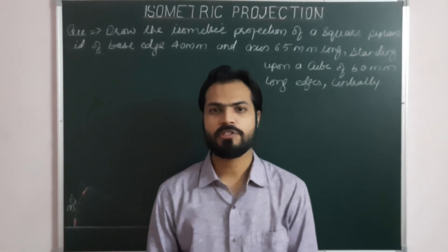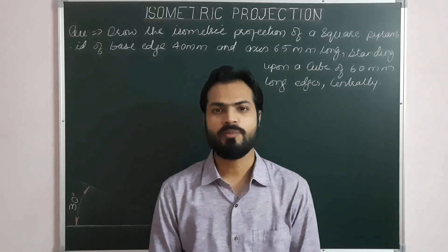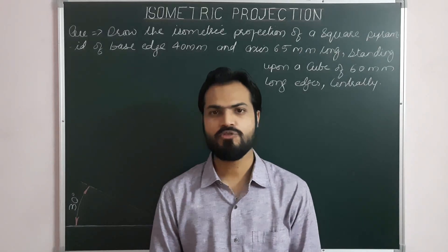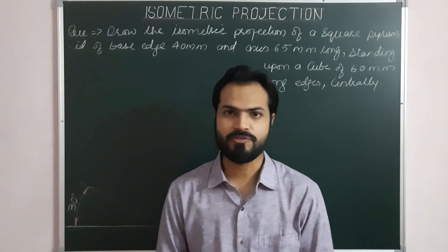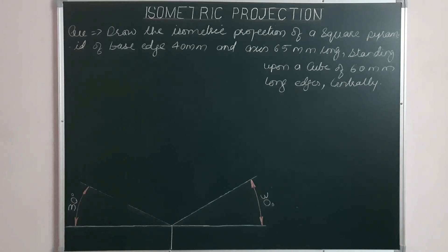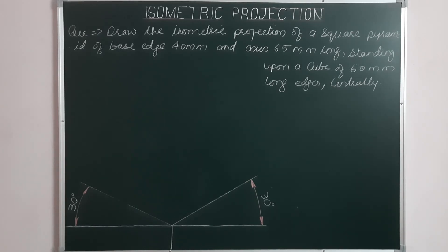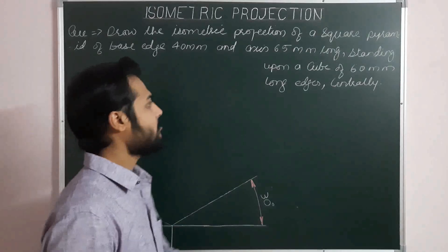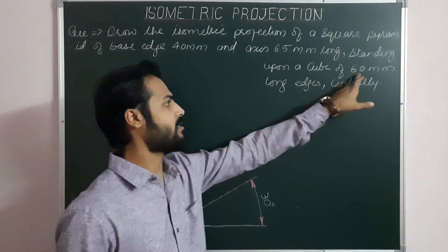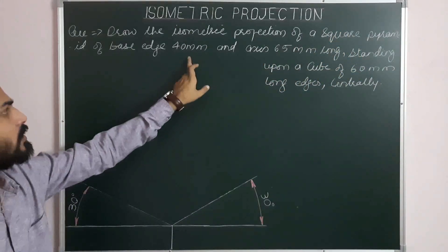Hello everyone. Today we are going to start the second part of isometric projection — that is, combination of solids. Here we will see how to draw the isometric projection of a combination of two solids. The problem is: draw the isometric projection of a square pyramid of base edge 40 mm and axis 65 mm long, standing upon a cube of 60 mm long edges centrally. In this problem, the two solids are: first, a cube of size 60 mm, and second, a square pyramid with base edge 40 mm.